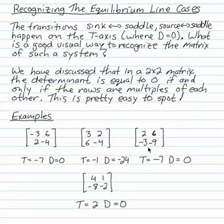Next example: two, six, and minus three, minus nine. Those are both multiples of one, three. Trace is minus seven, again, and determinant is zero. This is an equilibrium line sink.